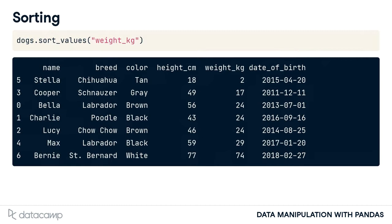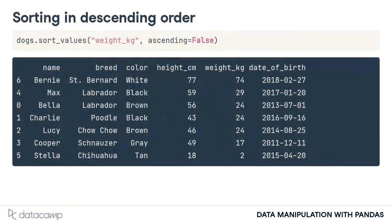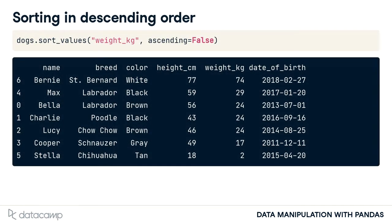For example, when we apply sort_values on the weight kilograms column of the dogs data frame, we get the lightest dog at the top — Stella the Chihuahua — and the heaviest dog at the bottom — Bernie the St. Bernard. Setting the ascending argument to false will sort the data the other way around, from heaviest dog to lightest dog.